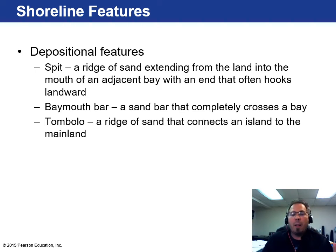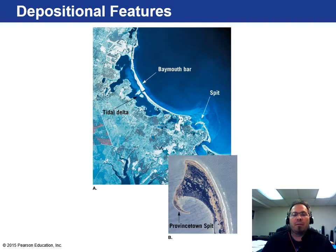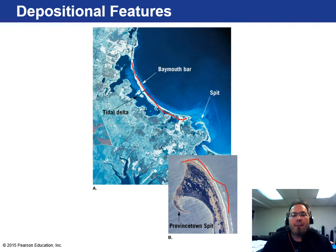In addition to erosional features, there are depositional features. A spit is a ridge of sand extending from the land into the mouth of an adjacent bay. A bay mouth bar is a sandbar that completely crosses a bay. A tombolo is a ridge of sand connecting an island to the mainland. Spits form because prevailing sediment transport carries material in one direction, curving and building the spit over many thousands of years.